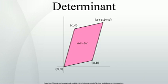In some cases they are used just as a compact notation for expressions that would otherwise be unwieldy to write down. The determinant of a matrix A is denoted det(A) or |A|. In the case where the matrix entries are written out in full, the determinant is denoted by surrounding the matrix entries by vertical bars instead of the brackets or parentheses of the matrix.